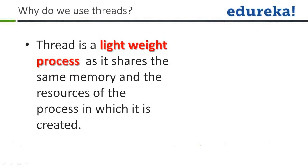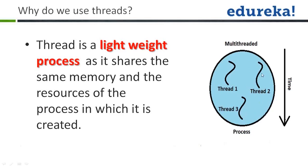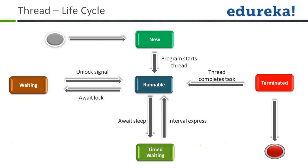Why do we use threads? A thread is a lightweight process as it shares the same memory and resources of the process in which it is created. Since all threads share the same memory, they do not need many resources and are very lightweight. That's why we use threads in our day-to-day applications. Different threads use the same resources available in the process, making them lighter than processes, which require their own separate resources.